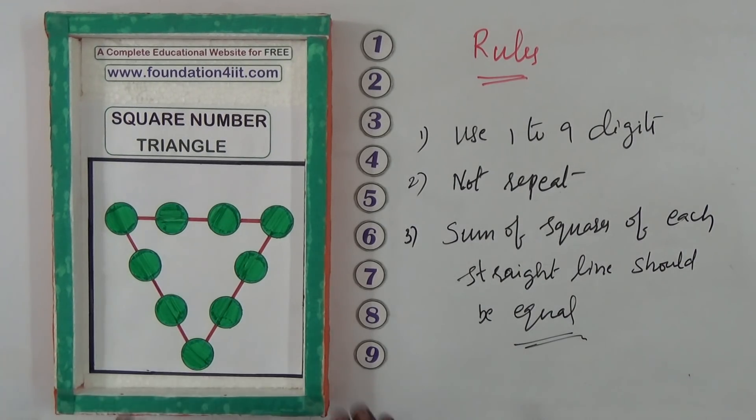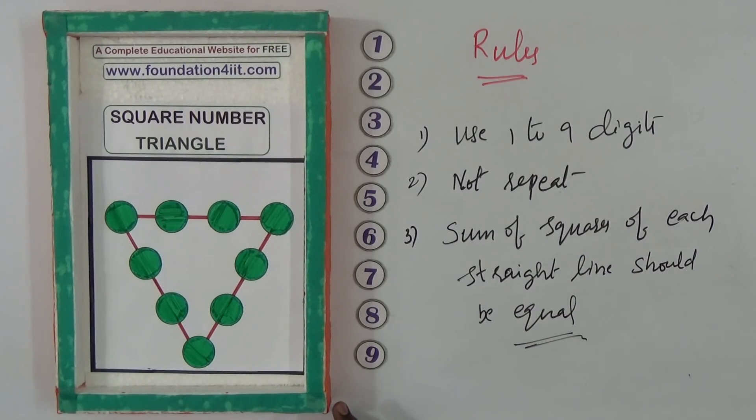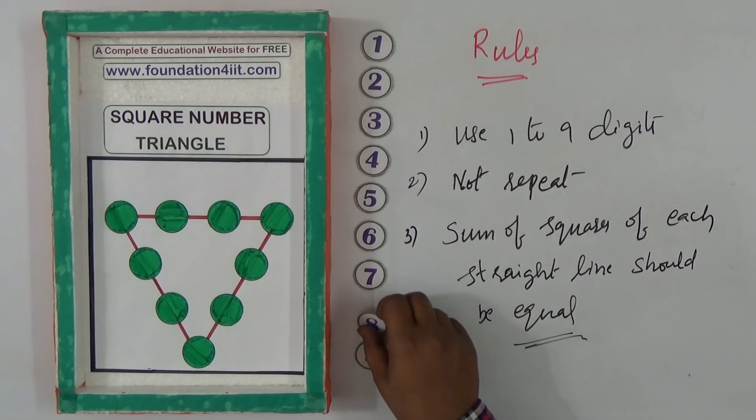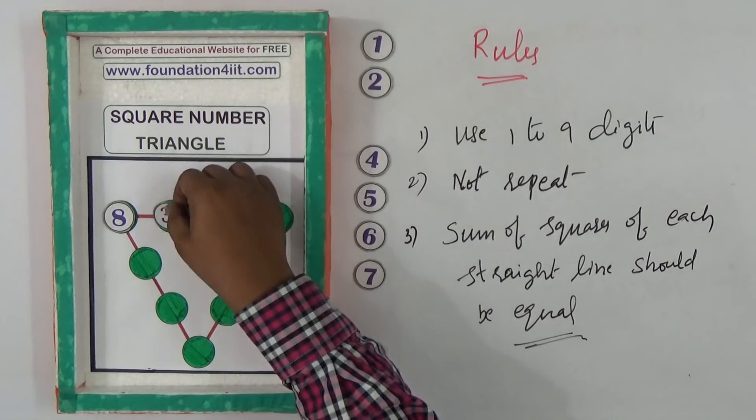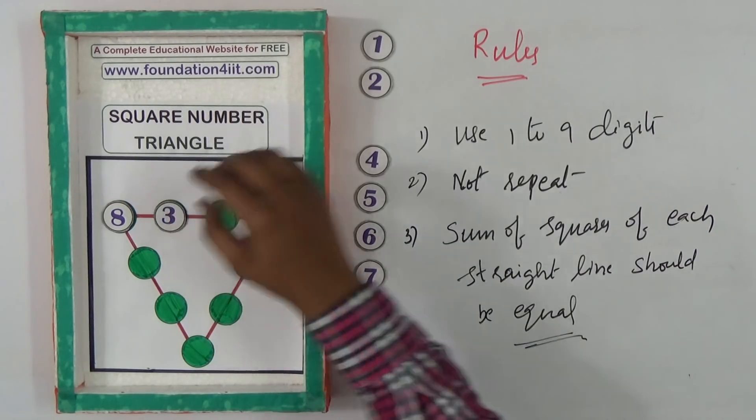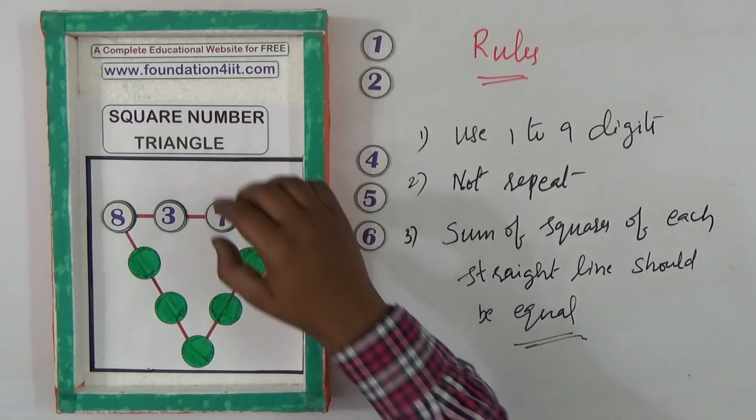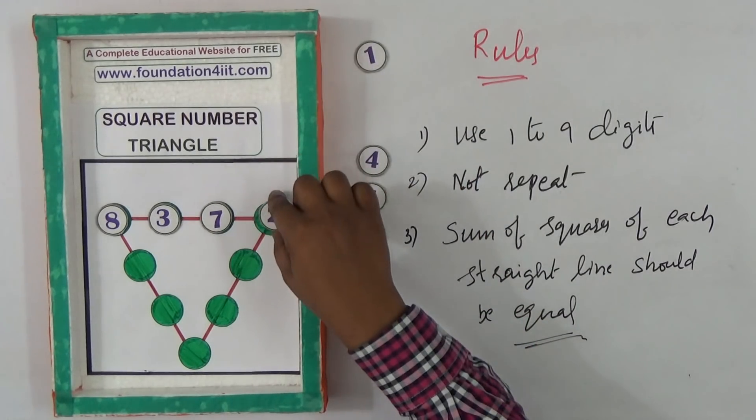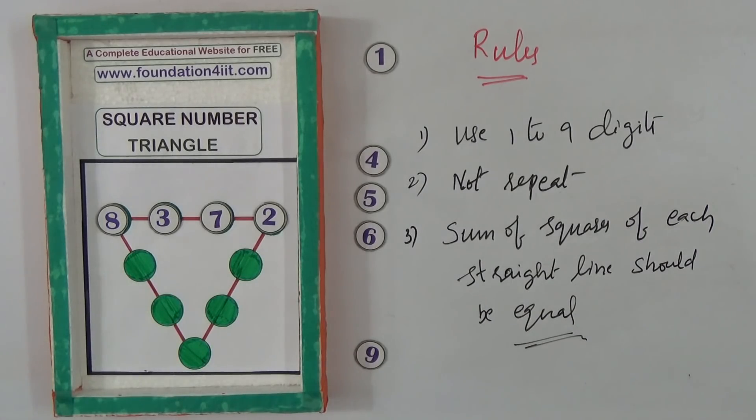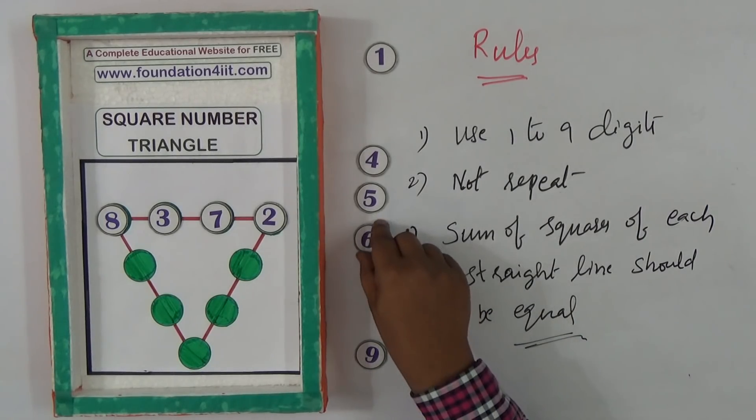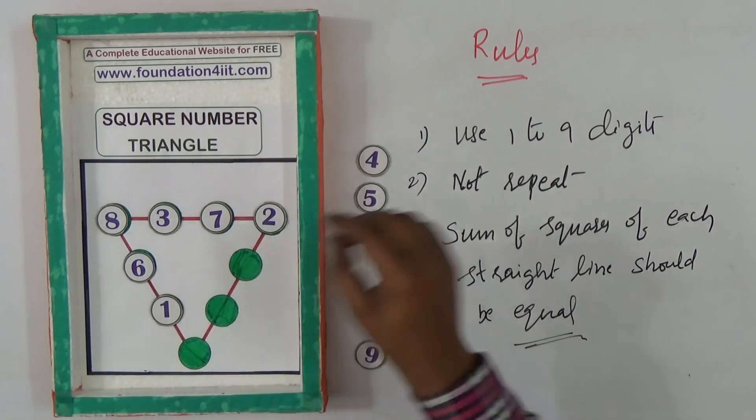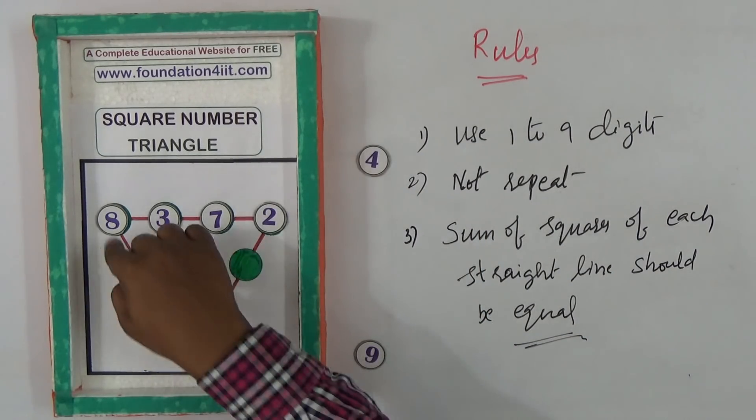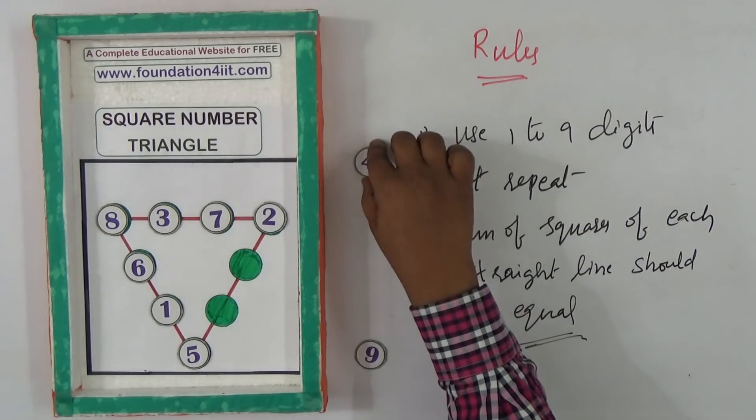I will explain one solution directly here. When you take the square of the number, for example, you take eight. I'm keeping here: eight, three, seven, two, six, one, and five. Four, nine you can keep in these places.